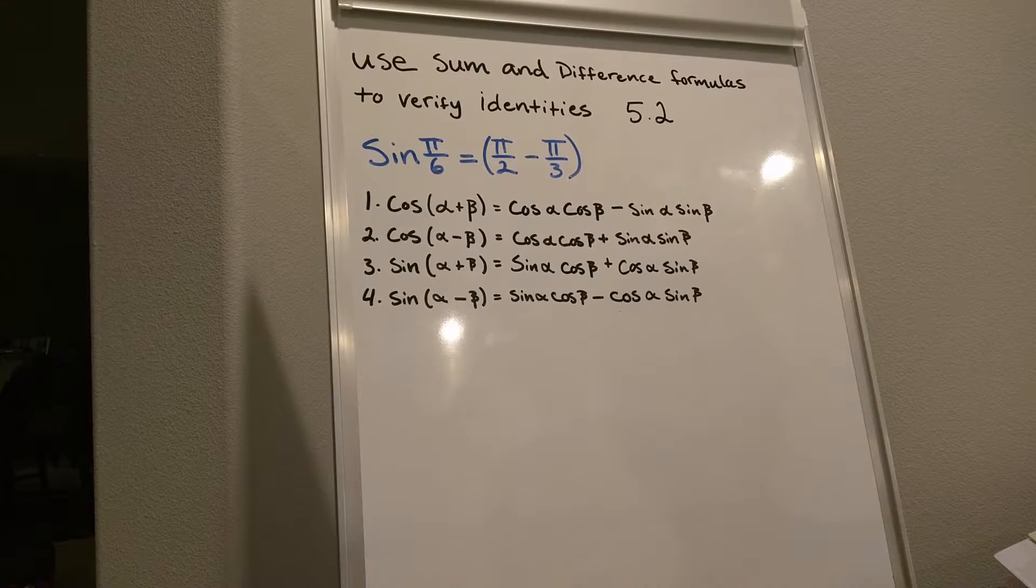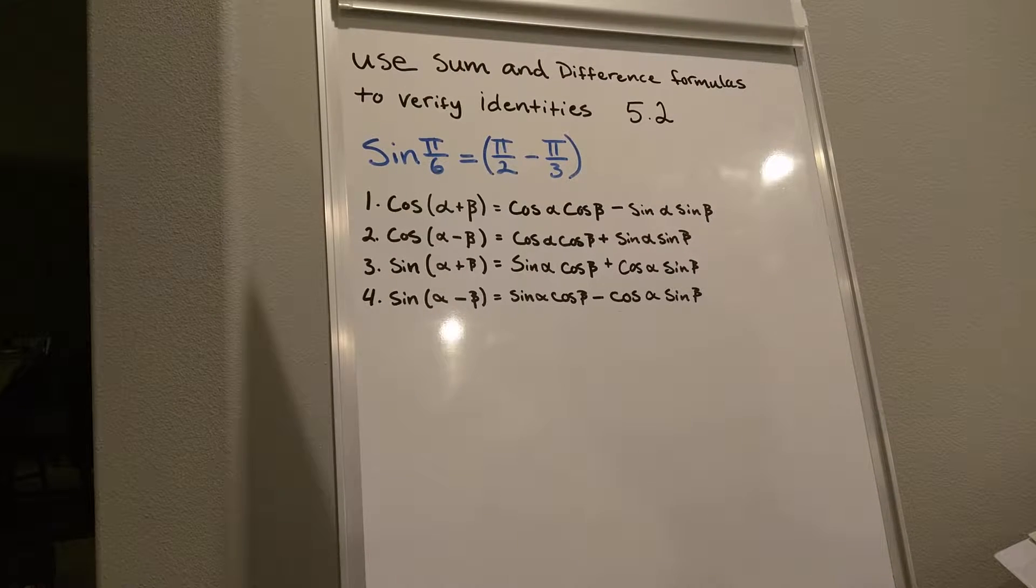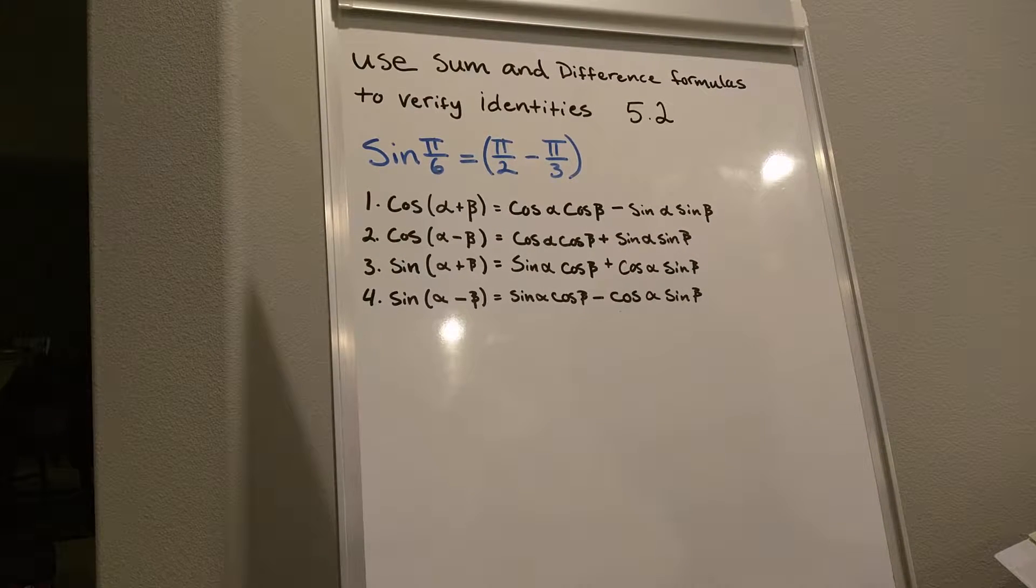Use sum and difference formulas to verify identities. Sine pi over 6 equals pi over 2 minus pi over 3.